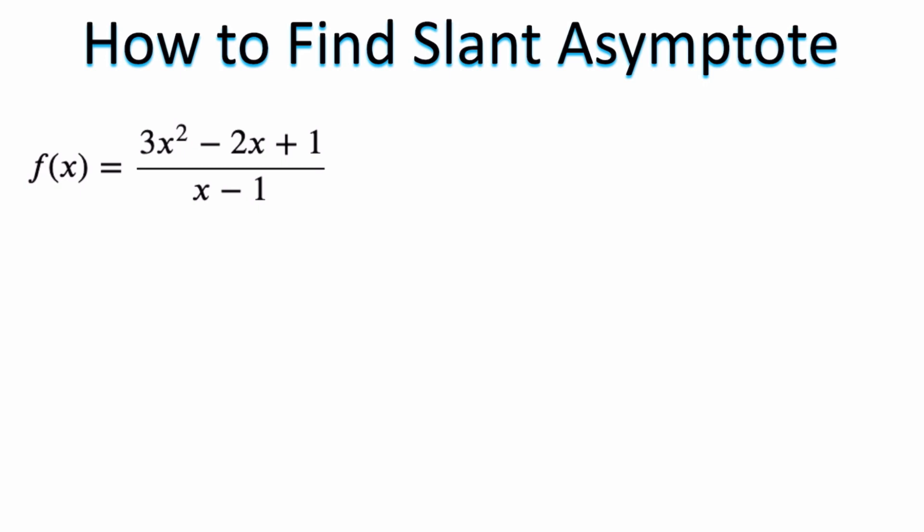Well first of all, how do you even know if you have a slant asymptote? That answer is easy. What you need to do is look at the degree of the numerator. By degree, it's the highest power, which in this case the degree of the numerator is 2, and I'm going to compare it to the degree of the denominator, which in this case I don't see one, so it is 1.